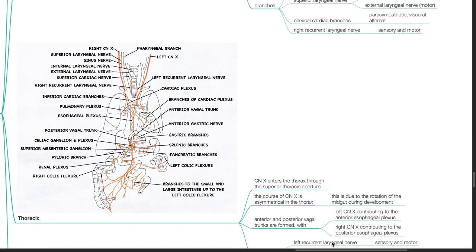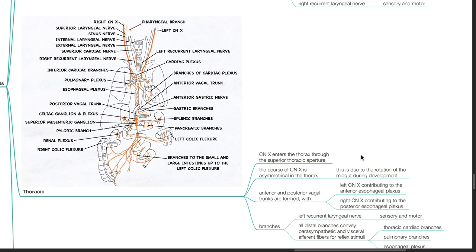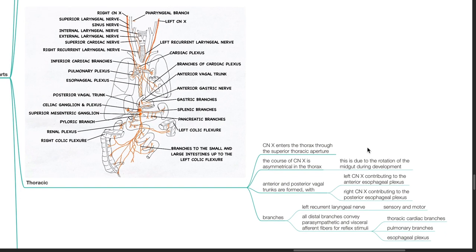The thoracic division: cranial nerve 10 enters the thorax through the superior thoracic aperture. Its course is asymmetrical in the thorax due to the rotation of the midgut during development. Anterior and posterior vagal trunks are formed, with the left cranial nerve 10 contributing to the anterior esophageal plexus and the right cranial nerve 10 contributing to the posterior esophageal plexus. Branches here include the left recurrent laryngeal nerve (sensory and motor), thoracic cardiac branches, pulmonary branches, and esophageal plexus.